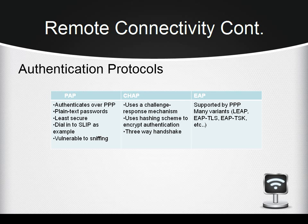Instead, CHAP uses a challenge-response mechanism with one-way hashing, and provides encrypted authentication via a three-way handshake. The last is Extensible Authentication Protocol, or EAP, a protocol for a variety of technologies which expands on the authentication methods used by the PPP protocol.